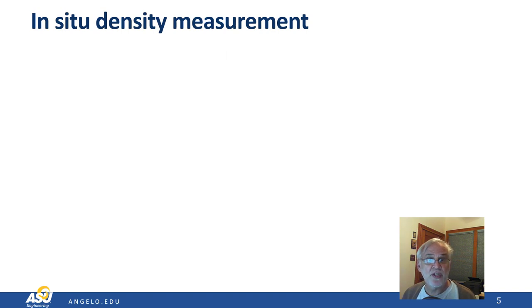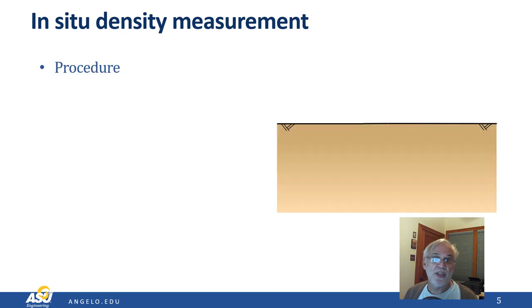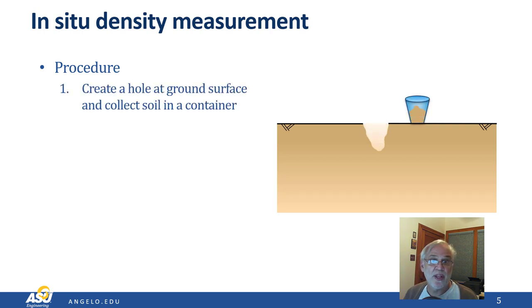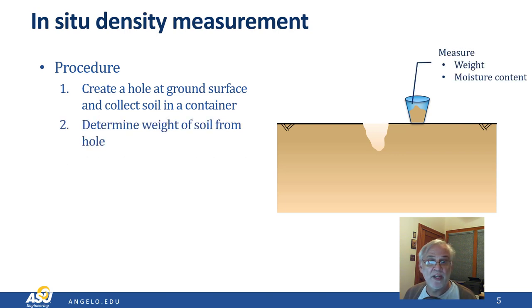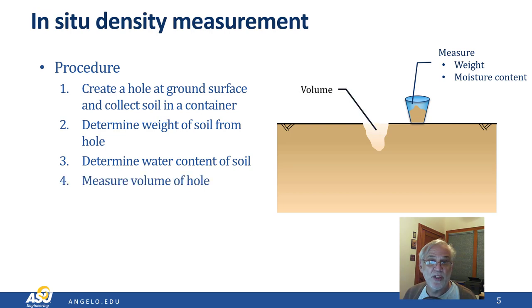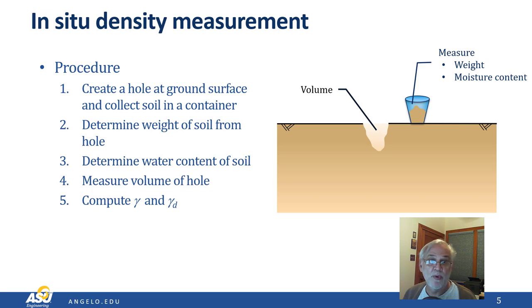The first method, measuring the in-situ density, is the most common method. There are a number of different ways of doing this, but they all follow the same basic procedure. First, we create a hole in the compacted soil at the ground surface and collect all the soil from the hole in a container. Once we've collected the soil, it's relatively easy to measure the weight of the soil collected from the hole and to determine its water content. Then we must find a way to measure the volume of the hole itself. Once we know the volume of the hole, the weight of the soil it contained, and its moisture content, we can compute both the total and dry unit weight of the soil after it was compacted.